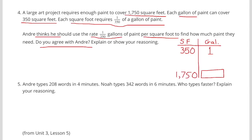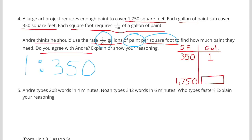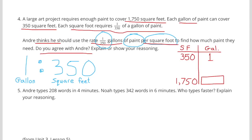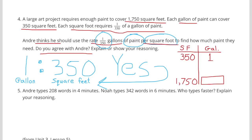1 gallon of paint for every 350 square feet. So 1 over 350. 1 would represent gallons. 350 would represent square feet. On my chart, I put 350 square feet on the left, and I put the gallon on the right. For every 1 gallon, the paint covers 350 square feet. For an unknown number of gallons, it's going to cover 1,750 square feet. They just asked a simple question. Do you agree with Andre? Yes. 1 to 350 is the ratio of gallons of paint per square feet.